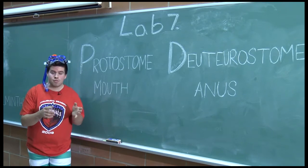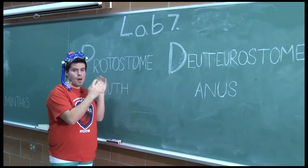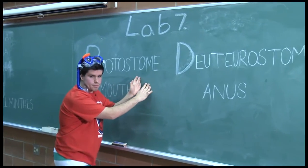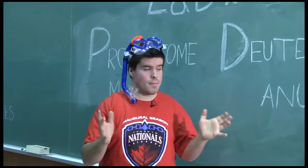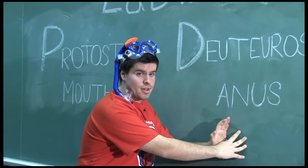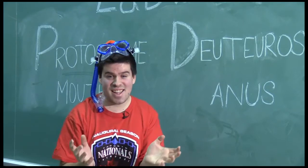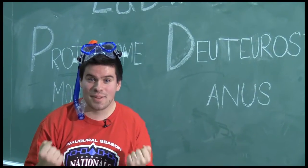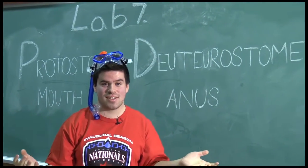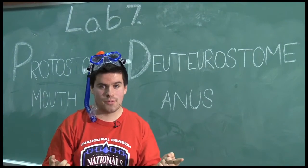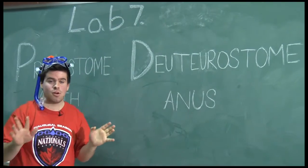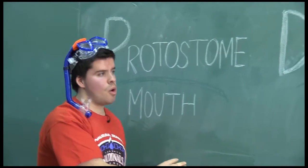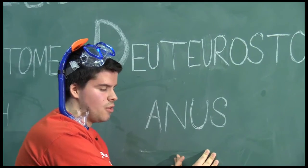There are two ways this can form. The first way is that the mouth develops first — this is known as protostome. The second way is that the anus forms first — these are your deuterostomes. Guess which one we are: we're the deuterostomes. Congratulations, you started off as a butthole. So it's important to remember there are two forms: protostomes, where the mouth develops first, and deuterostomes, where the anus develops first — which is us.